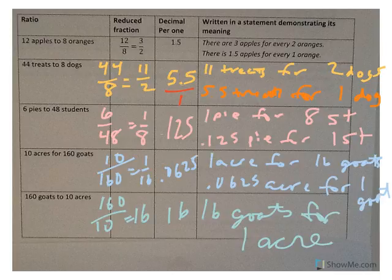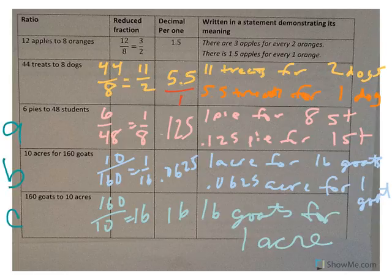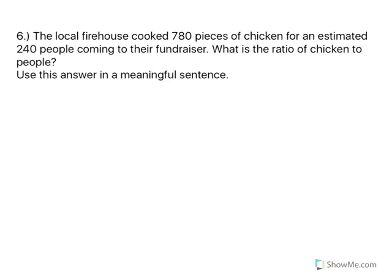All right, so you can see each of these has a reduced fraction, changed to a decimal, top number divided by the bottom number. And then, if we're talking about A, B, and C, A and B both have two sentences. One using the fraction, one using the decimal. But you'll see in letter C that the fraction and the decimal both reduced to be the same. So we really only have one sentence, 16 goats for one acre of land.